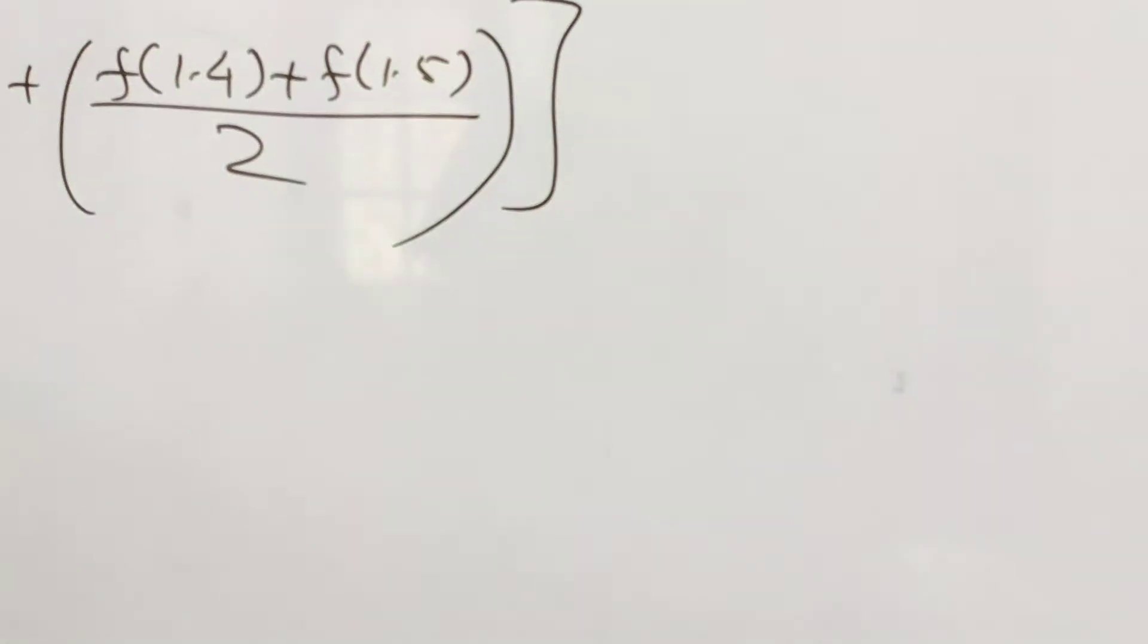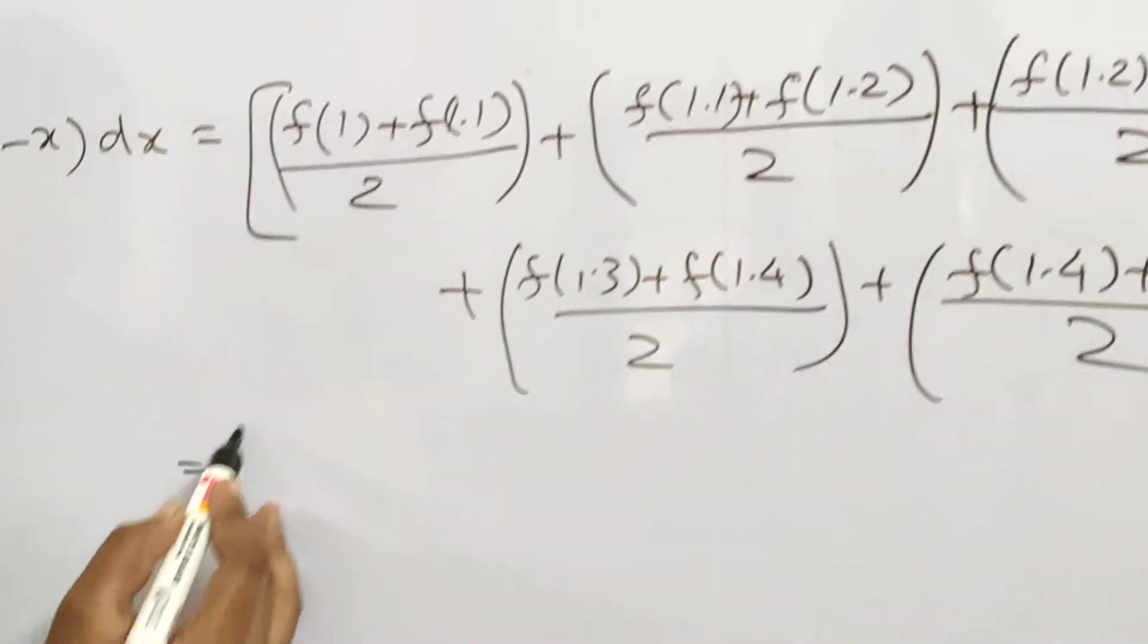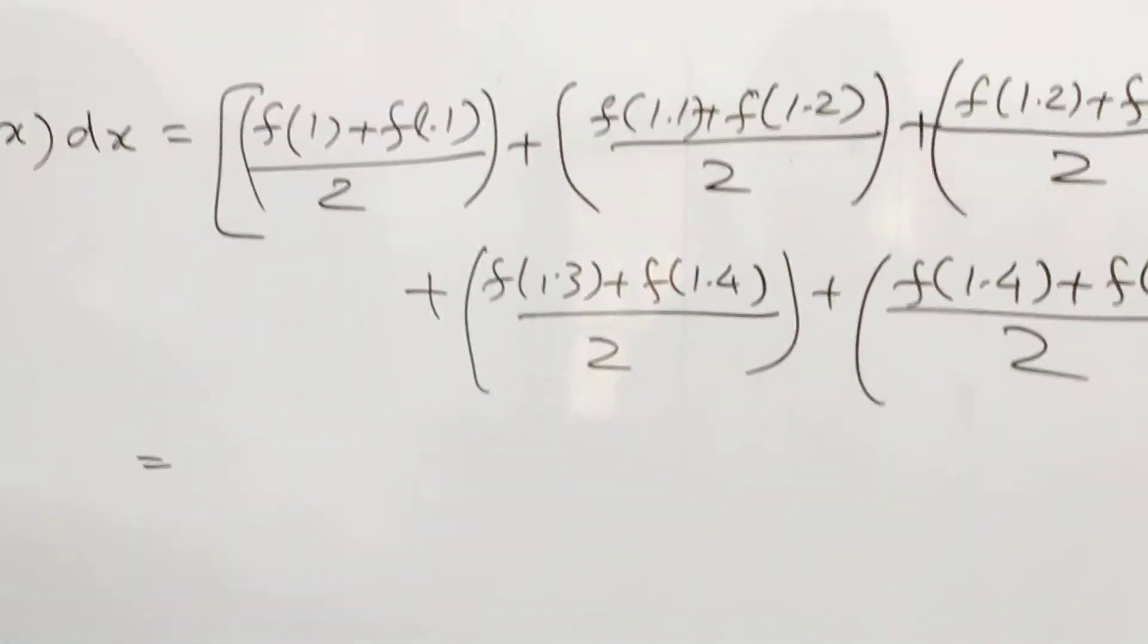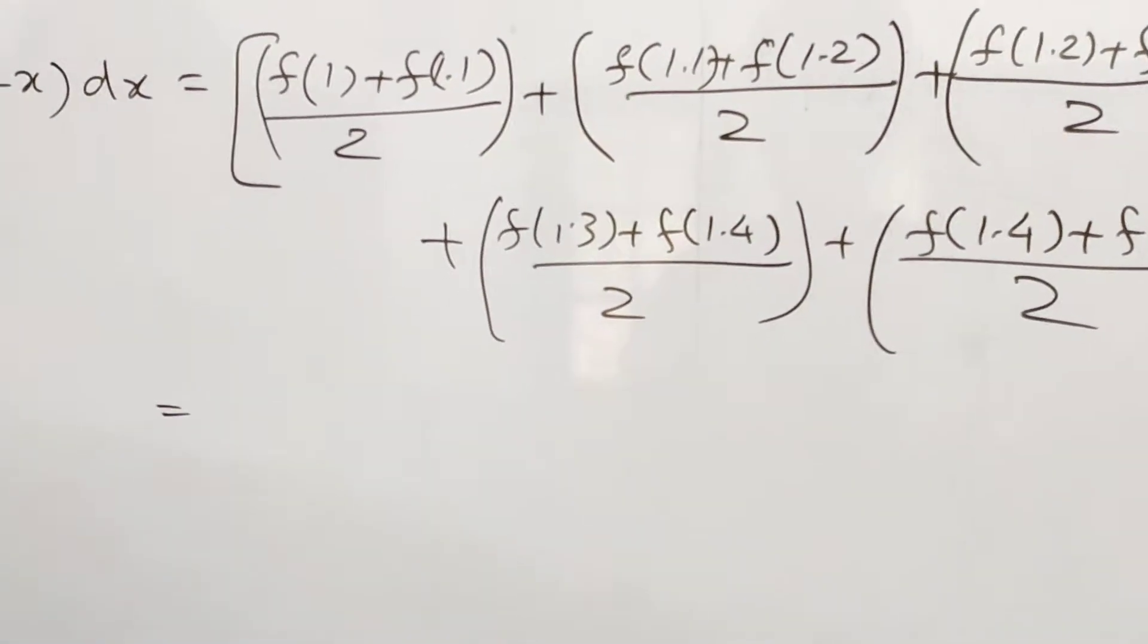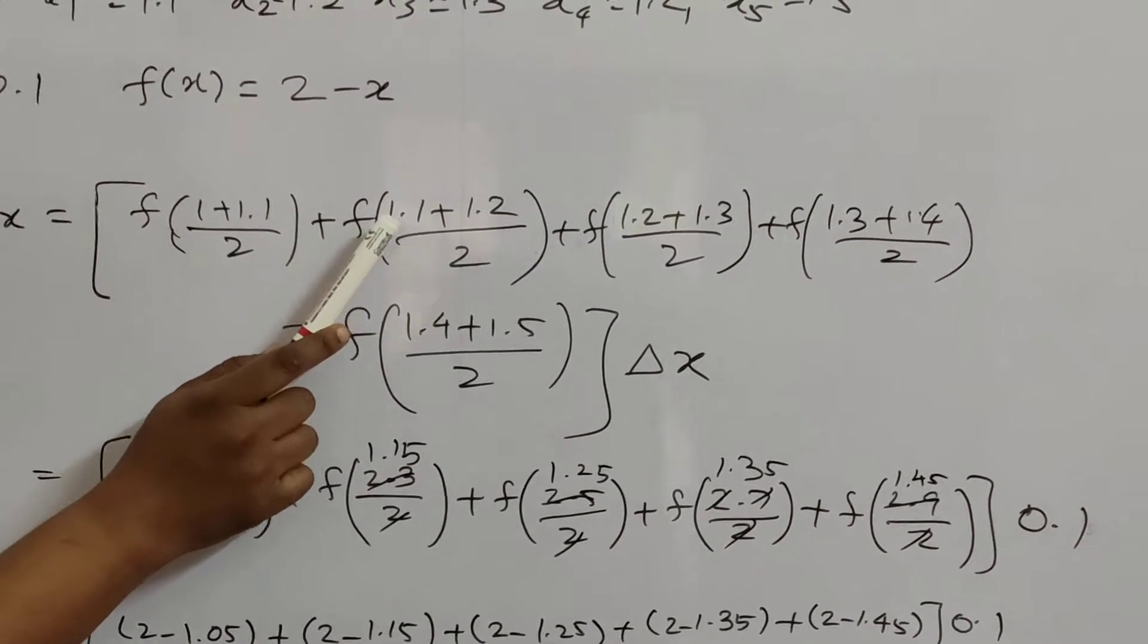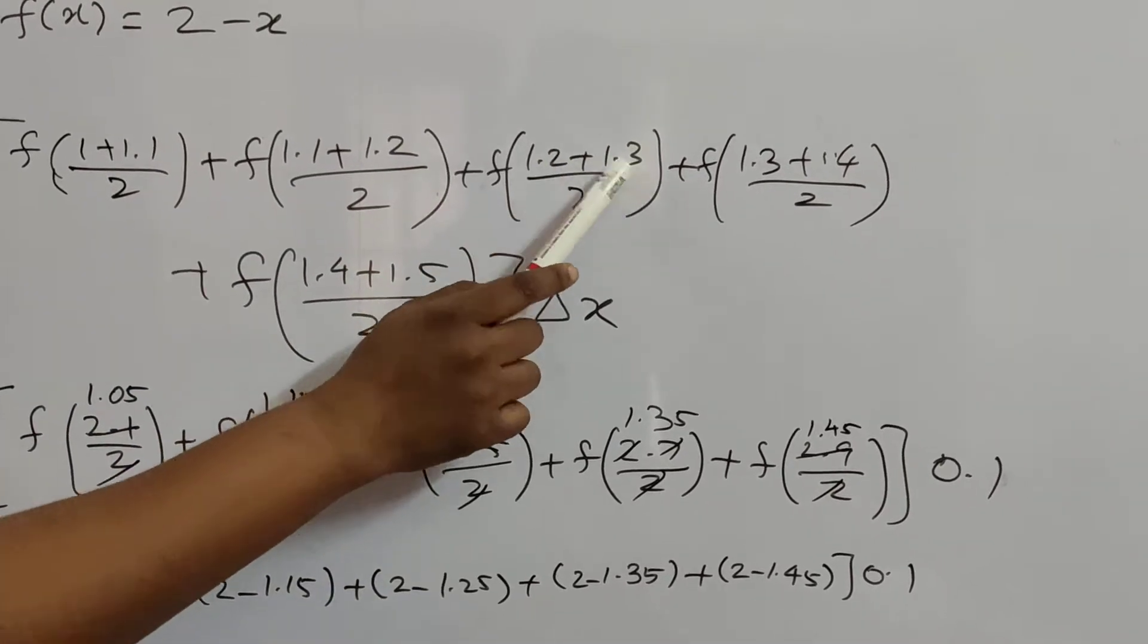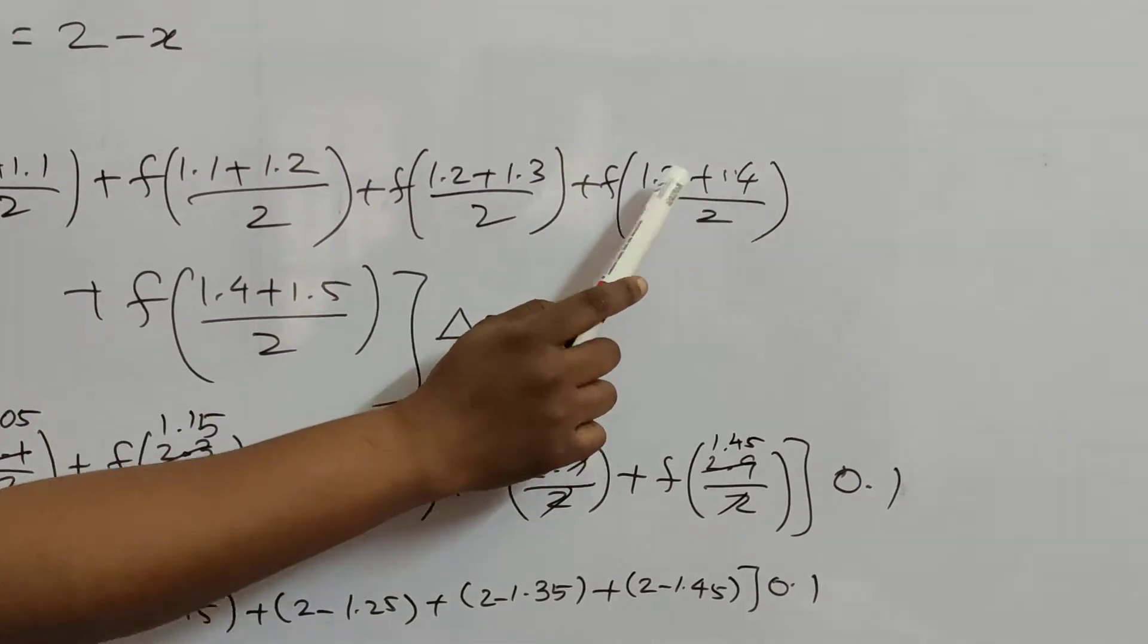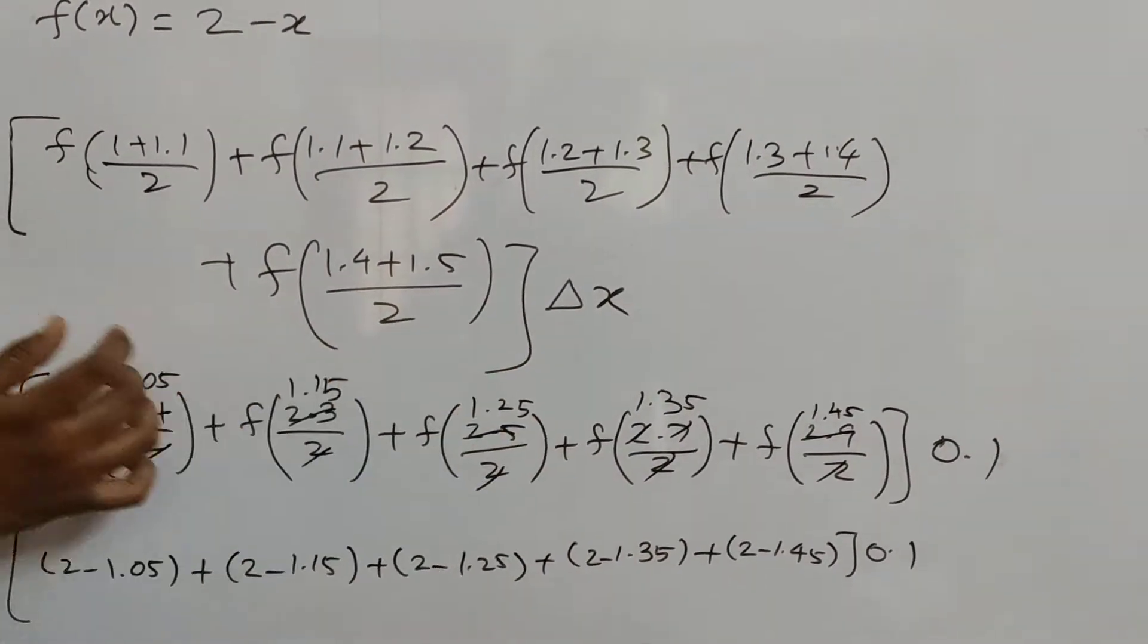The midpoint formula is: f of (x0 plus x1)/2 plus f of (x1 plus x2)/2 plus f of (x2 plus x3)/2 plus f of (x3 plus x4)/2 plus f of (x4 plus x5)/2 into delta x.